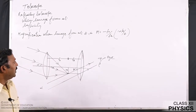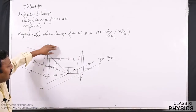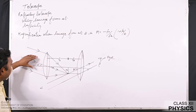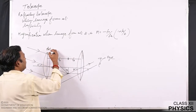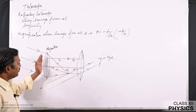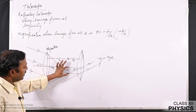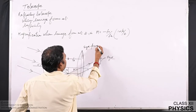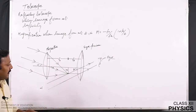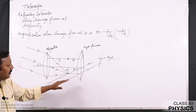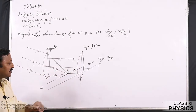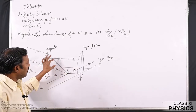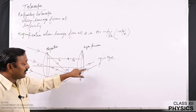Now we will see the magnification produced by a telescope when the image forms at infinity. The parallel beams from infinity fall on the first objective lens, which forms an inverted image at the focus point. This image formed by the objective acts as an object for the eyepiece. The final image formed by the eyepiece may be at infinity or at the distance of distinct vision, depending upon the location of the image formed by the objective.